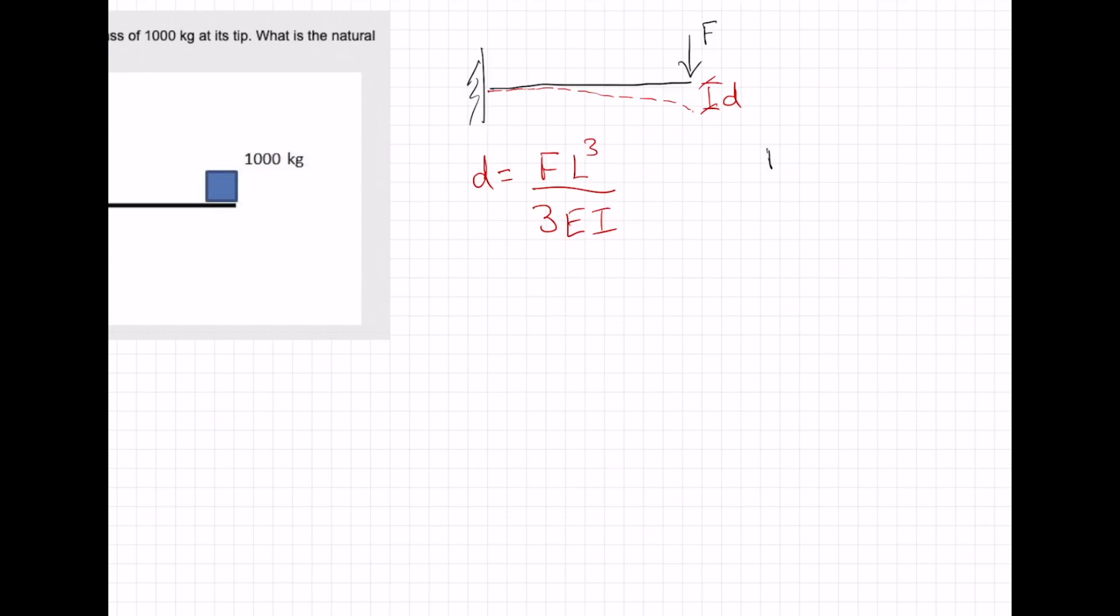Now, if we have a typical linear system that obeys Hooke's Law, we have F is equal to some stiffness times the deflection. We actually have this equation here, except we have this in the form of x is equal to F over K. So we have K is equal to 3EI over L cubed.